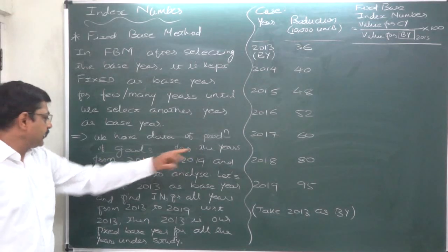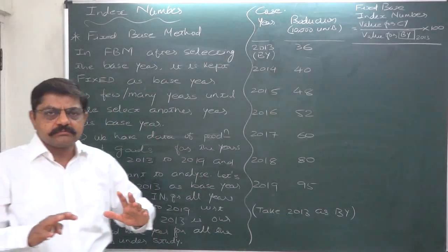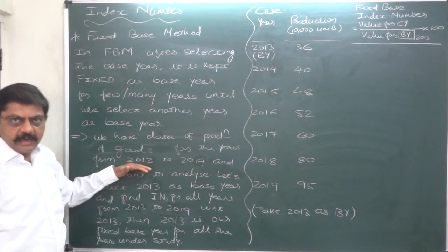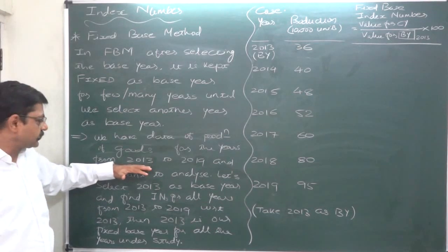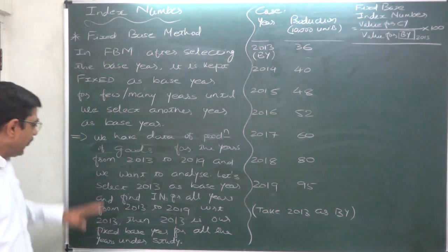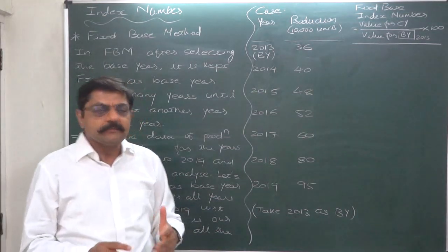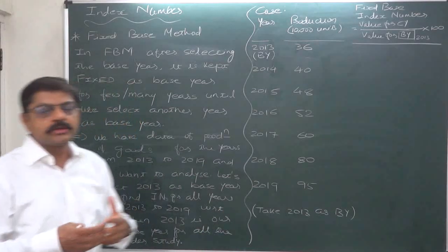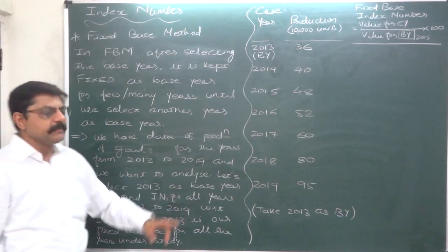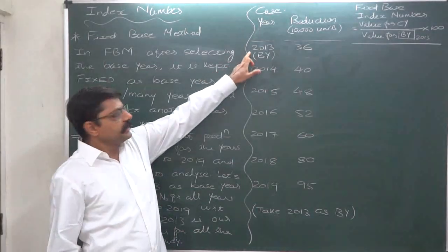Let us take an example. We have data of production of goods for the years from 2013 to 2019. Let us suppose that a factory was established and started functioning from the year 2013. We have data of production of goods by that particular factory for the time series from 2013 to 2019, and we want to compare the production quantity or value for all these seven years. Let's select 2013 as the base year, because that is the first year of the data.